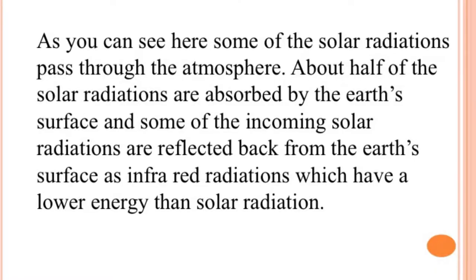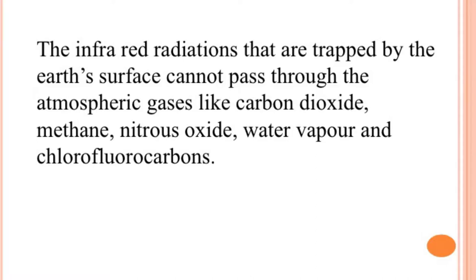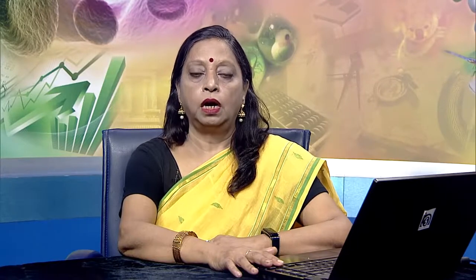In the present slide you can see the greenhouse effect. Some of the solar radiations pass through the atmosphere; about half of the solar radiations are absorbed by the earth's surface. Some of the incoming solar radiations are reflected back from the earth's surface as infrared radiation, which has lower energy than solar radiation. The infrared radiation trapped by the earth's surface cannot pass through atmospheric gases like carbon dioxide, methane, nitrous oxide, water vapor and chlorofluorocarbons. These radiations are converted into heat energy, which brings about the warming of the lower atmosphere. The increase in carbon dioxide in the atmosphere intensifies the greenhouse effect and leads to global warming, resulting in an increase in the temperature of the earth.